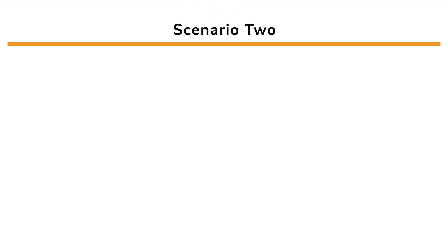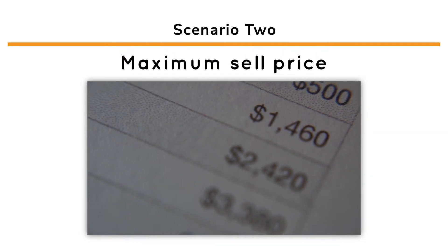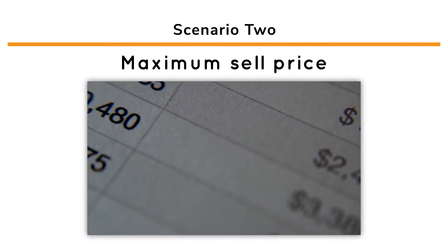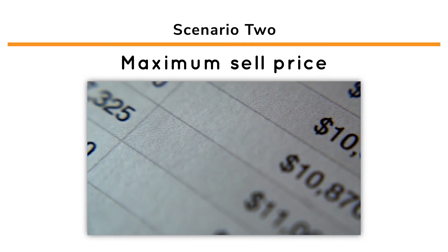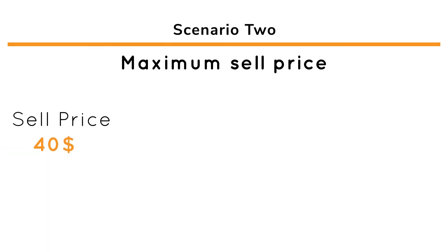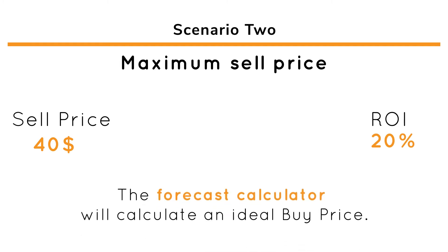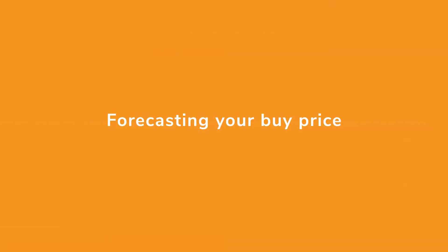Now let's look at Scenario 2. In this scenario, let's say for example you have a list of suppliers to source a product from that range in prices. But after looking at the list of sellers on Amazon, you determine that your maximum price that you can sell the product at is $40. In this case, you want to make a 20% ROI, so you would use the Forecast Calculator to calculate an ideal buy price you need to purchase the product at from one of your suppliers in order to make the 20% ROI or above. This is considered forecasting your buy price.